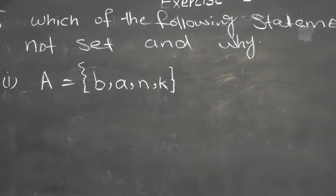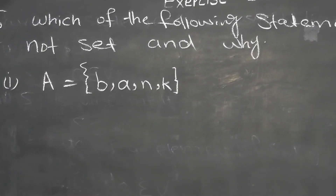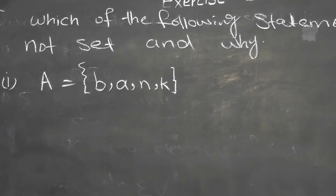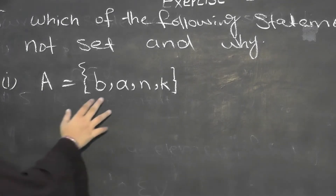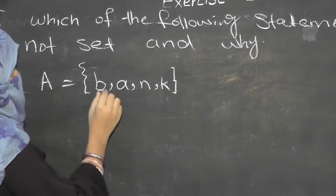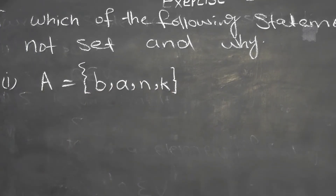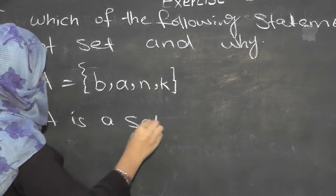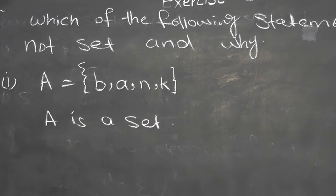Looking at B, A, N, K — no alphabet is repeated, so it is distinct. It is also well-defined because these are the alphabets of the word 'BANK,' which are clearly identifiable English letters. So this is both well-defined and distinct.